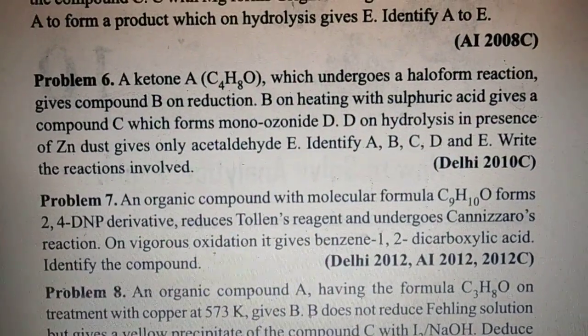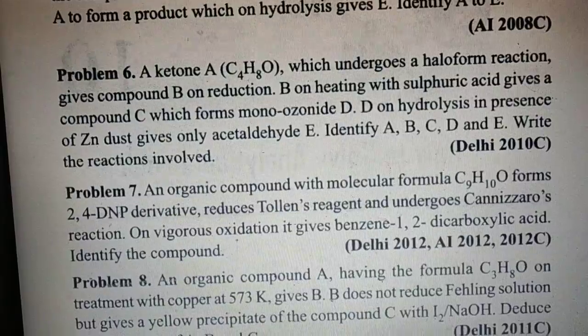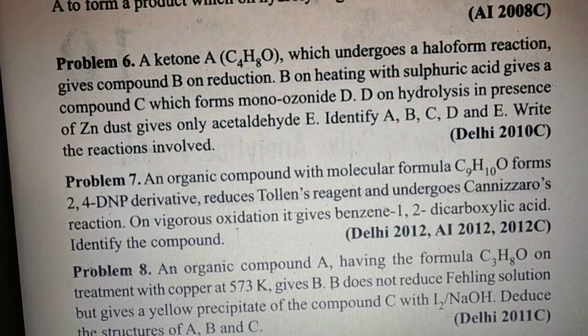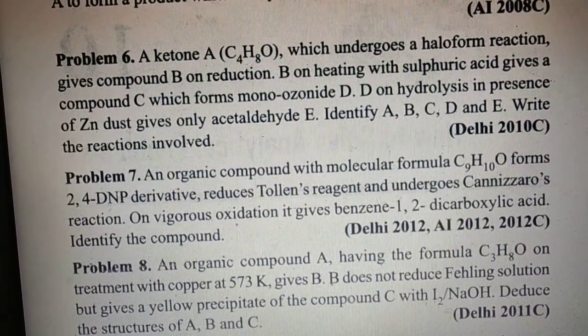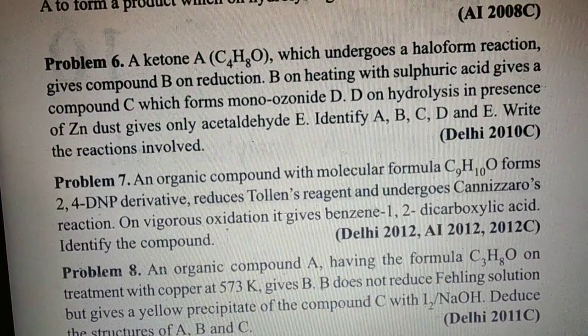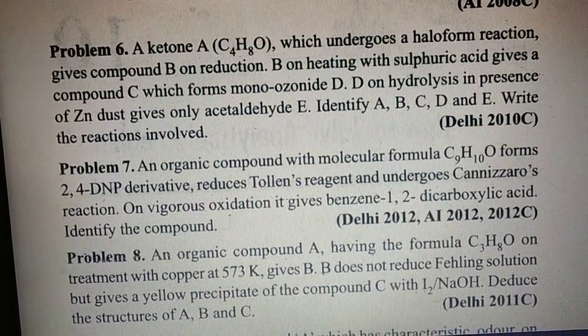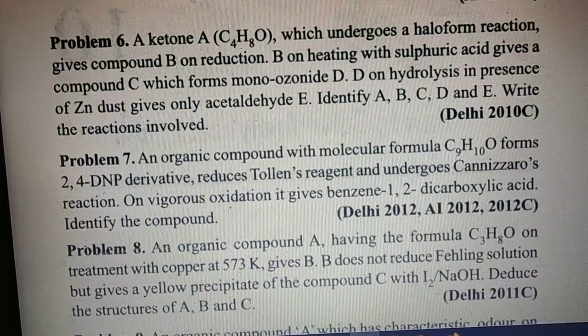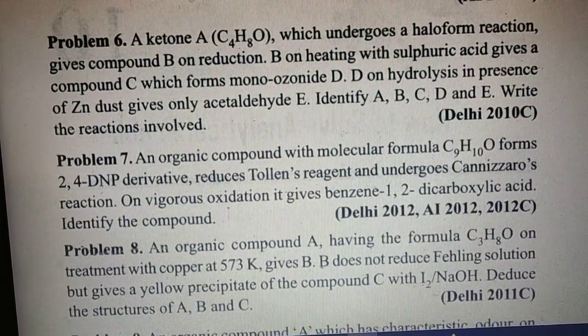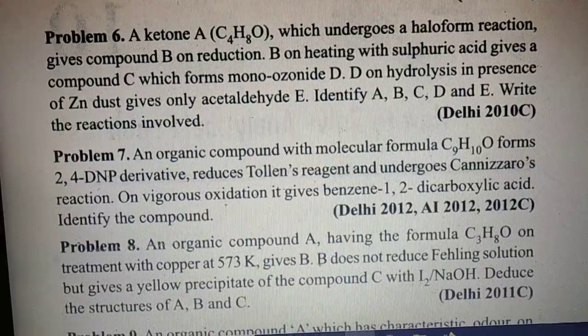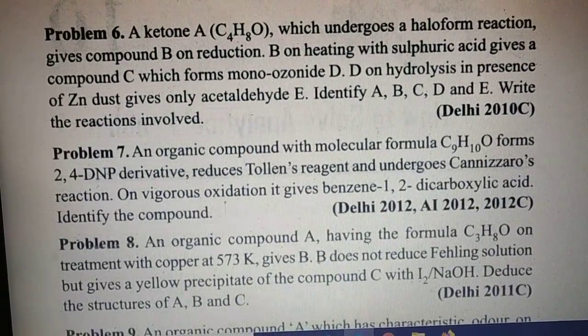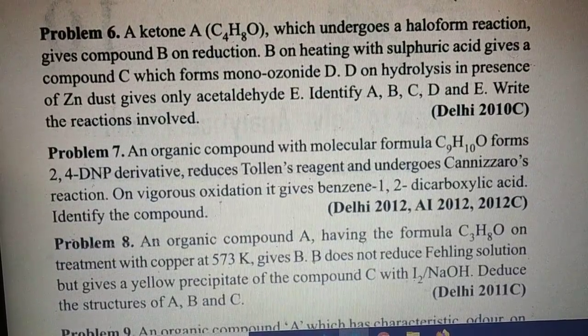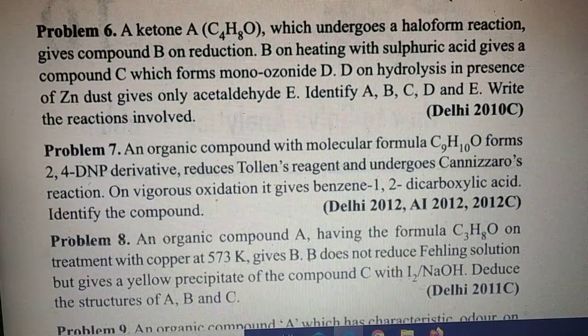In 6th position we have a ketone A that is C4H8O which undergoes haloform reaction. CHI3 reaction is given only by ketone. Now component B on reduction, B on heating with sulfuric acid gives component C. Heating with sulfuric acid means dehydration reaction, water molecule is released. Compound C forms a mono-ozonite derivative D, and D on hydrolysis in presence of zinc gives only one component, that is acetaldehyde E. Identify A, B, C, D, E.